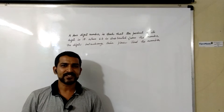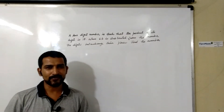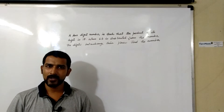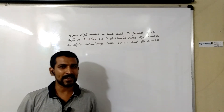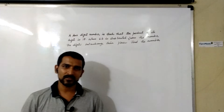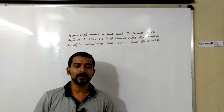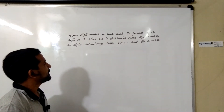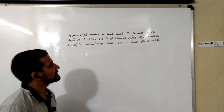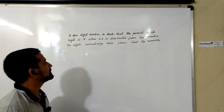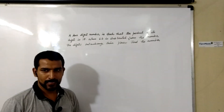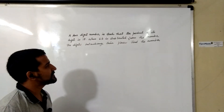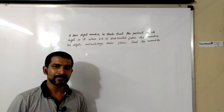Hello. In this session on problems of quadratic equations, in the last session we saw how to find a two-digit number using a quadratic equation. We will take example number 2, based on the same concept: how to find a two-digit number. It is given that a two-digit number is such that the product of its digits is 18. When 63 is subtracted from the number, the digits interchange their places. Find the number.